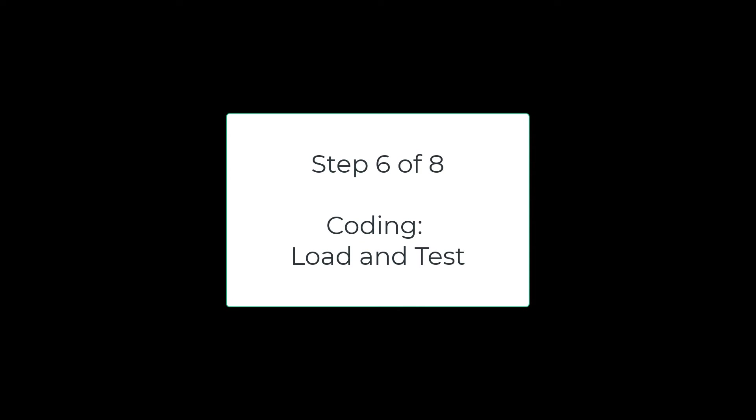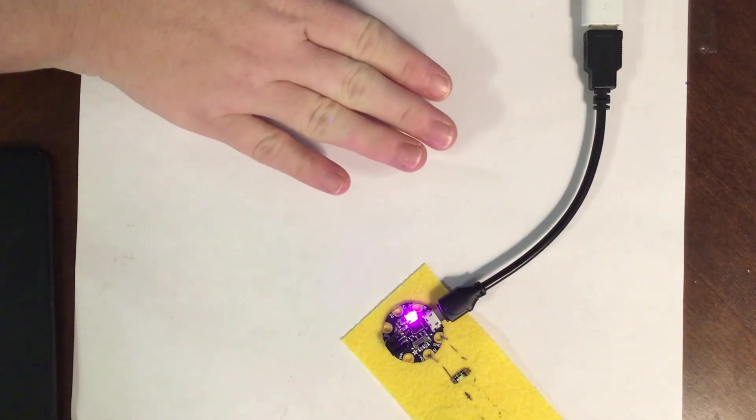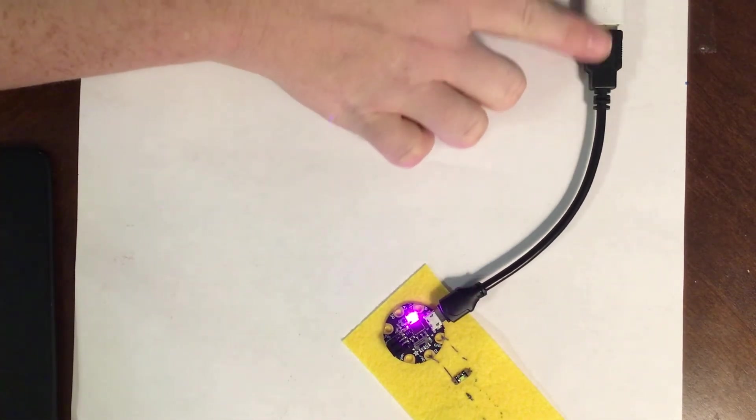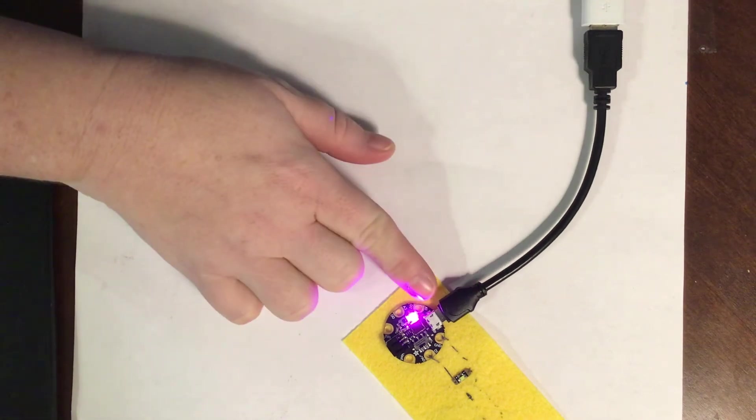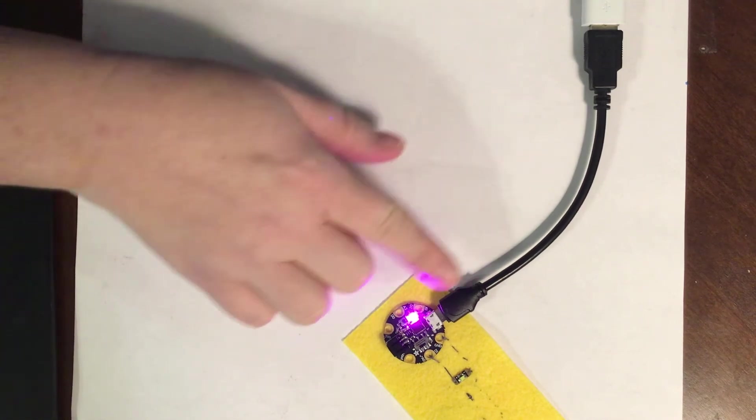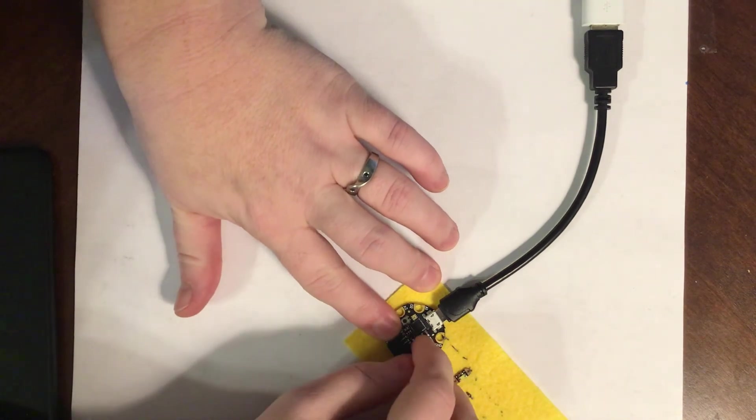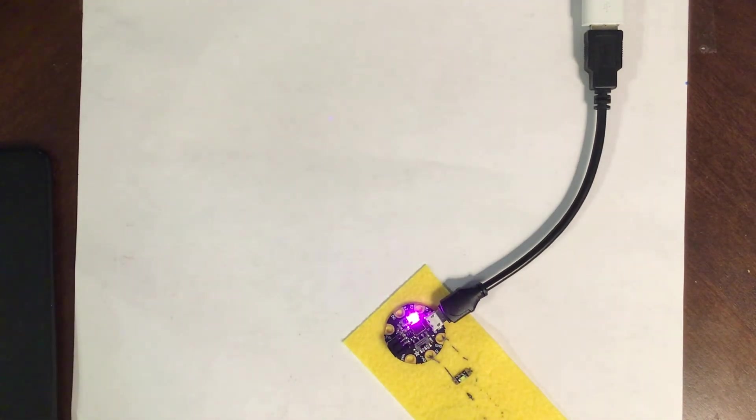Now that the program is written, we can load it onto the board. Okay, so over here, I have connected my USB to my computer, and also to the micro USB port on the Gemma board. There's power to it already. If you connect yours, and it doesn't provide power, the board itself might be off. There's a little switch right there. Just flip it back on and see if that works.